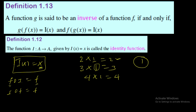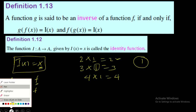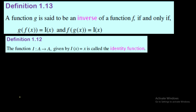So when you compose any function with the identity, the result is the function itself. This means: when you compose two functions and get the identity function x, the two functions are inverses of each other. That is Definition 1.3. Let us see by example.